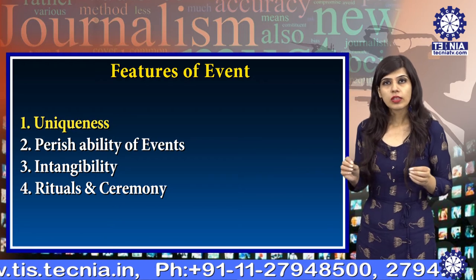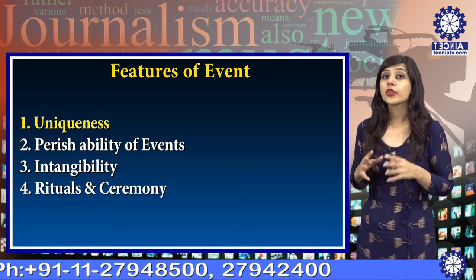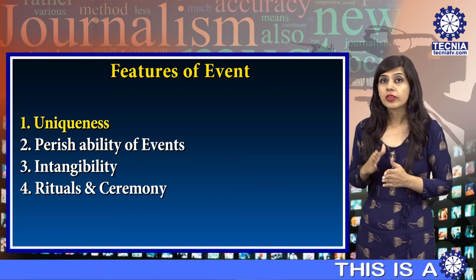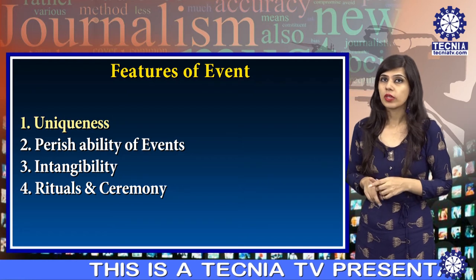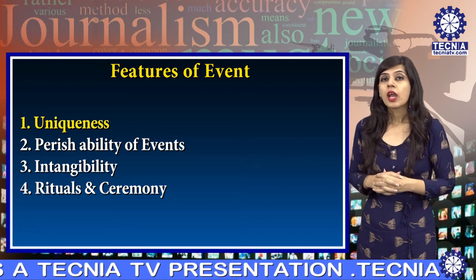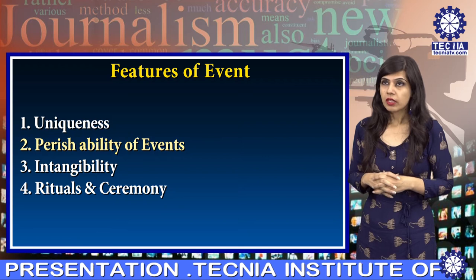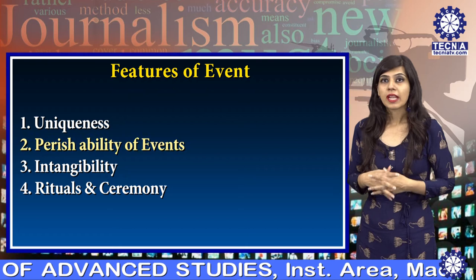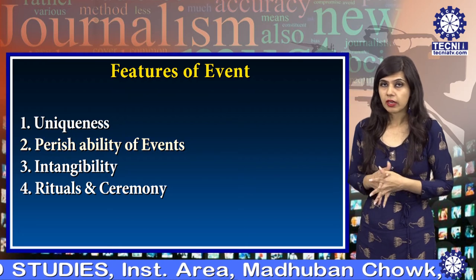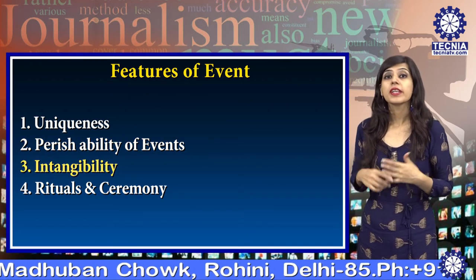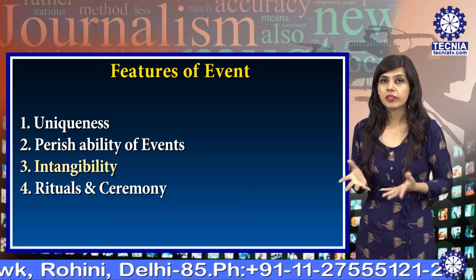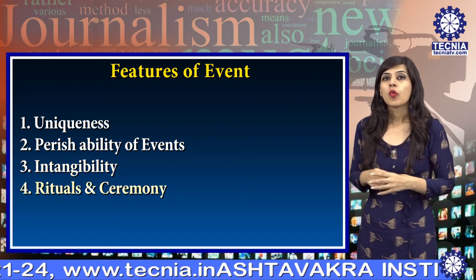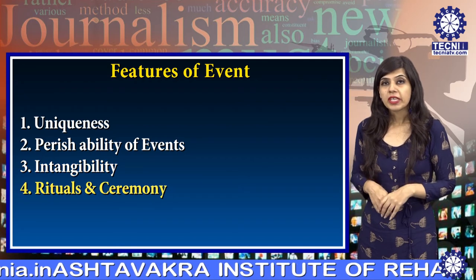Now let us discuss the features of events. The first feature is uniqueness — all events are unique in themselves, meaning one event cannot be compared to another; they are each one of a kind. The second feature is perishable — events are not for a longer time; once the event is over, that is why we call it perishable. The third feature is intangible — we can't touch or see an event, but we can feel what is happening.